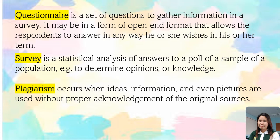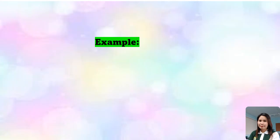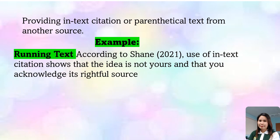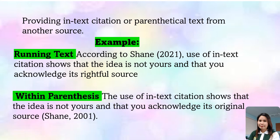How to avoid plagiarism? You can avoid it by providing in-text citation or parenthetical text from another source. For example, in running text: according to Shane (2021)... Use of in-text citation shows that the idea is not yours and that you acknowledge its rightful source. You have to put the name of the author and the year it was published. You can avoid plagiarism by using running text or within parenthesis.